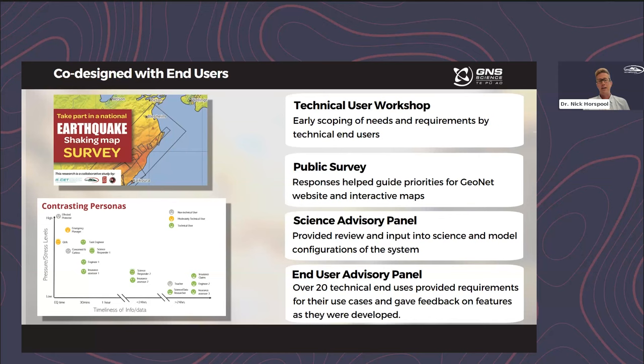We set up two panels to seek feedback as we were developing the project. The first was a science advisory panel, which provided review and input into our science and model configurations, helping sense-check what we were doing and provide confidence that we are delivering the tool with the latest science available. We also set up an end user advisory panel, primarily of technical end users. These helped give us feedback on how they would use the tool, what features they would like, and as we developed beta products, they also tested these and provided feedback.